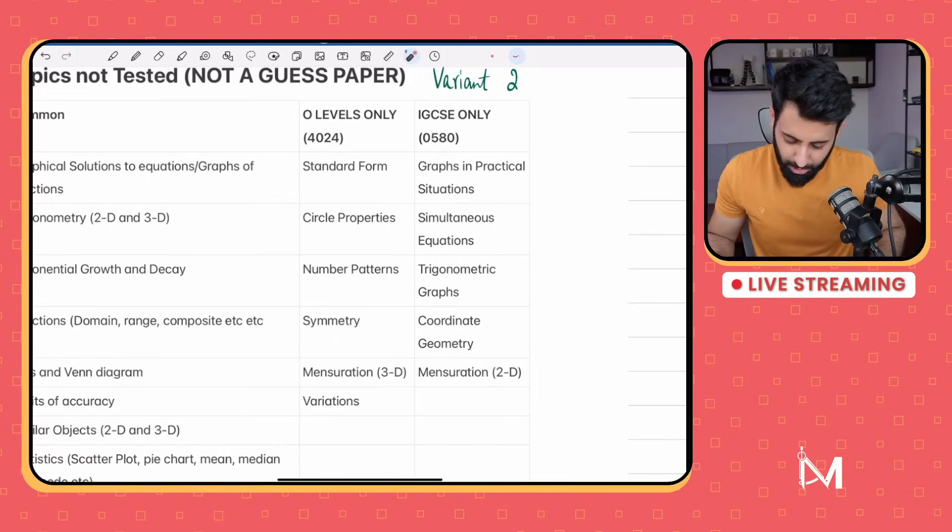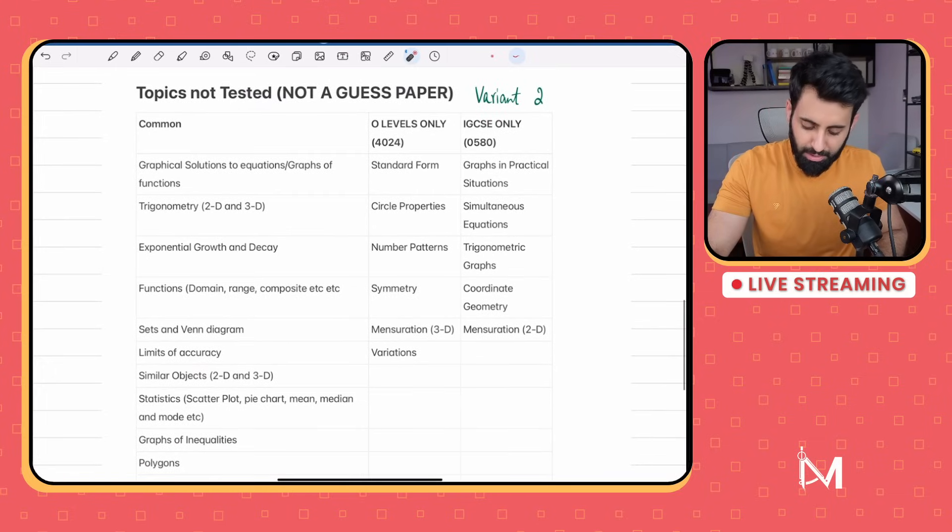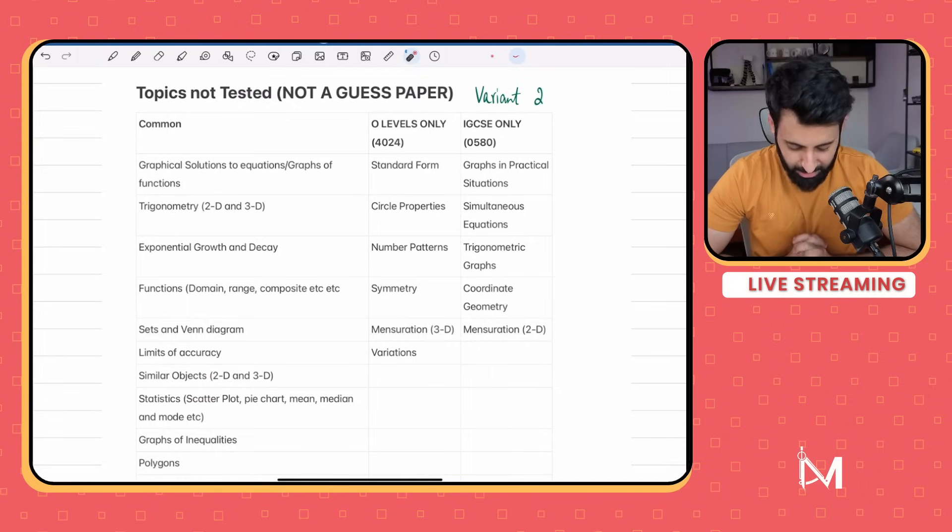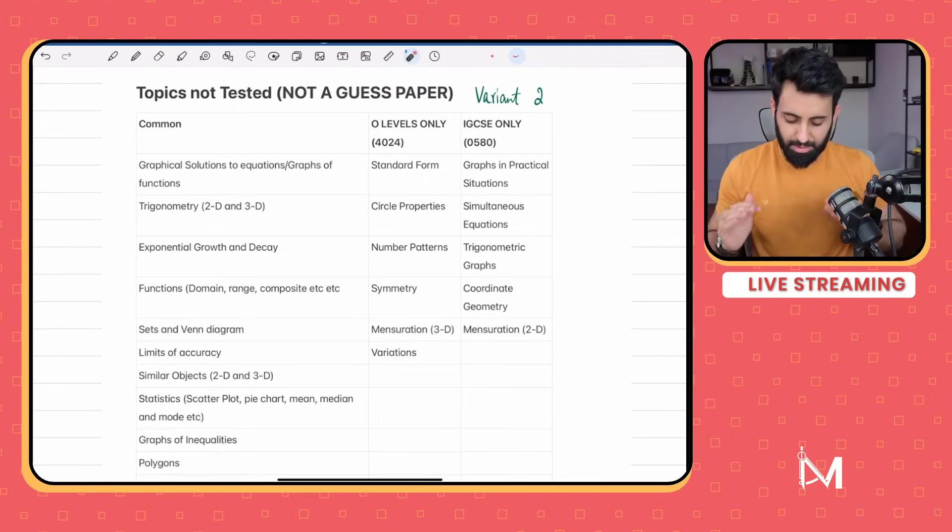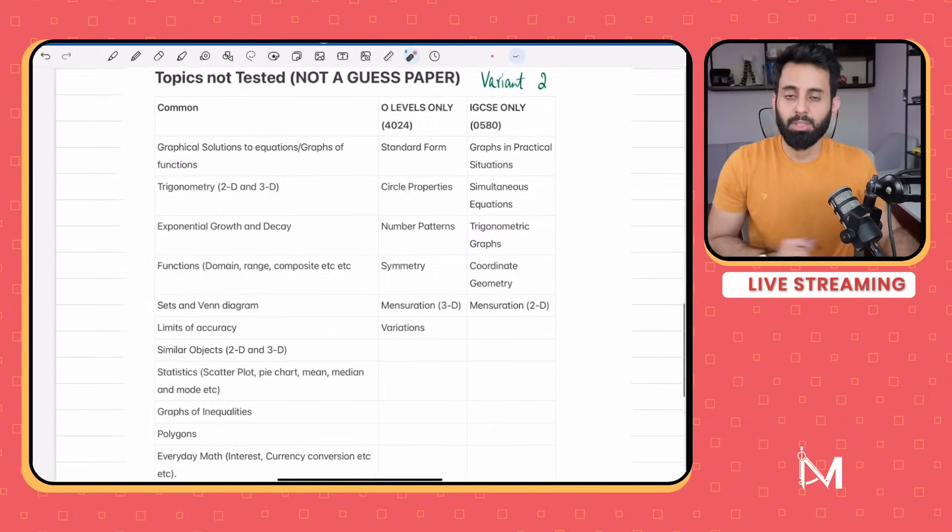This was basically just to sort of help you out so you don't end up practicing questions of the topic that have been tested already. There will inshallah be mock exams and I'll try and make sure to keep the mock exams from the topics that haven't been tested. Once again, not a guess paper by any means. If you've been following my channel, you know I don't do guess papers of any sort. But yes, when you have two papers of the same subject, you can kind of expect what's to come in the following paper. And you have a lot of data to support that.